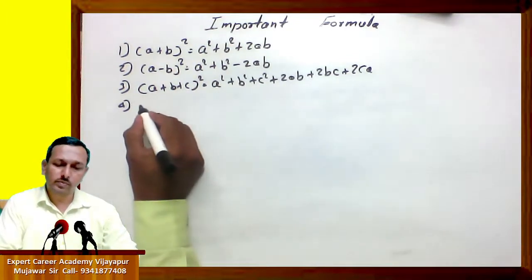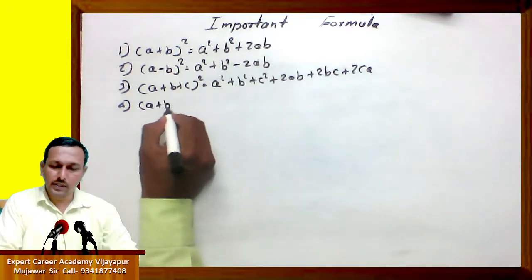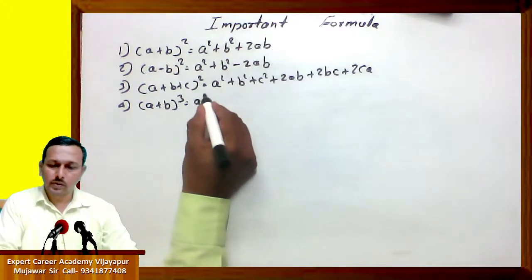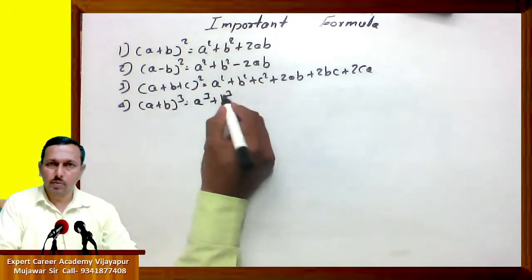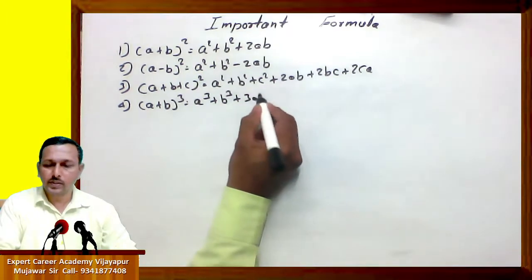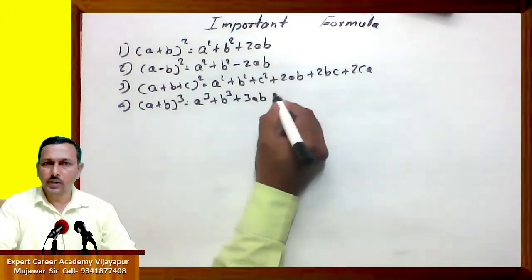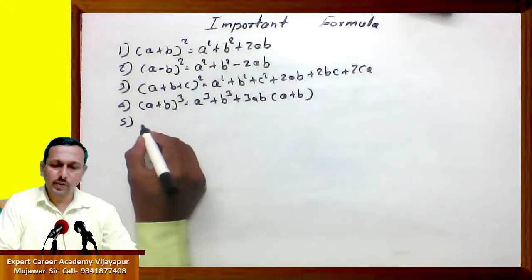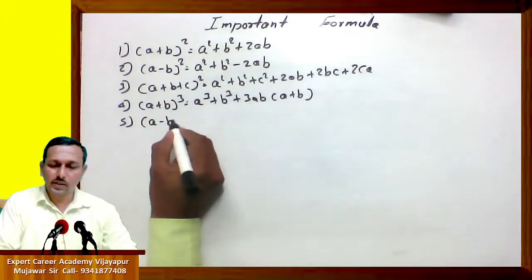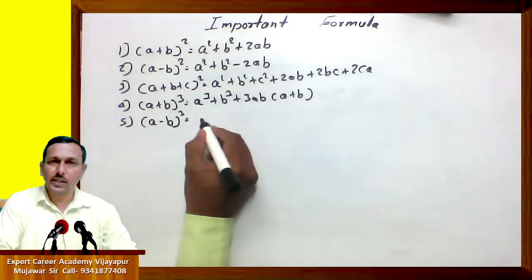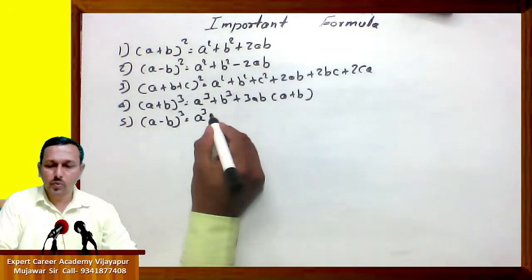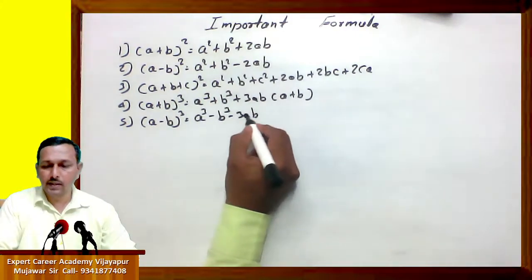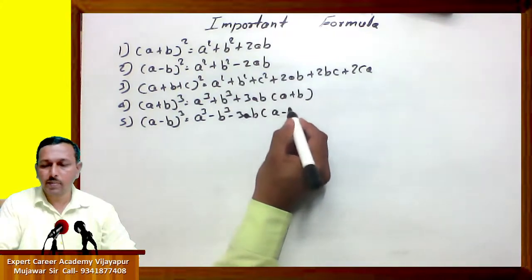Fourth one: (a plus b) bracket cube equals a cube plus b cube plus 3ab into bracket (a plus b). Fifth one: (a minus b) bracket cube equals a cube minus 3ab into bracket (a minus b).